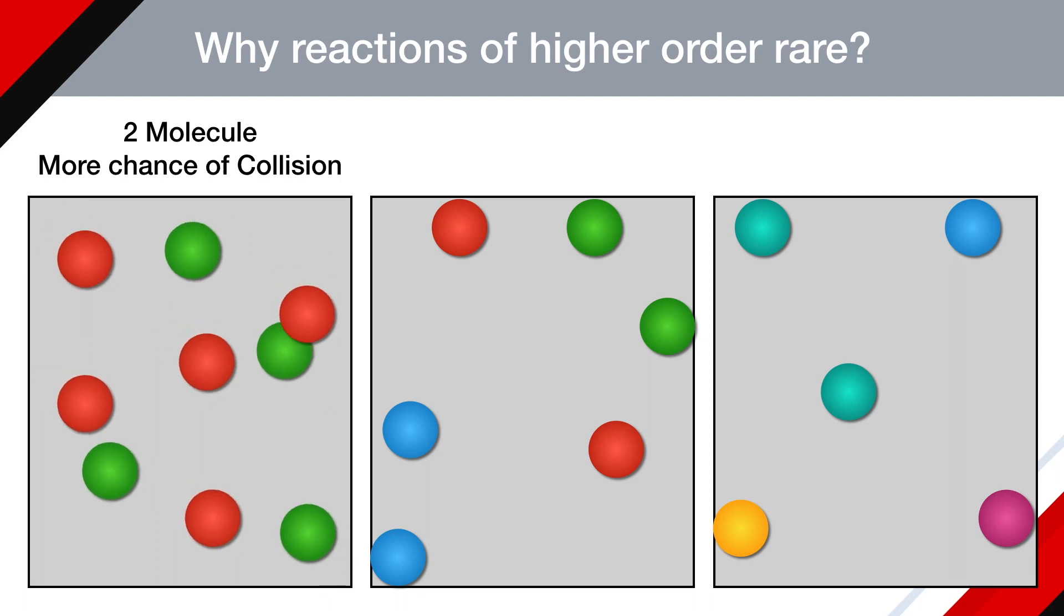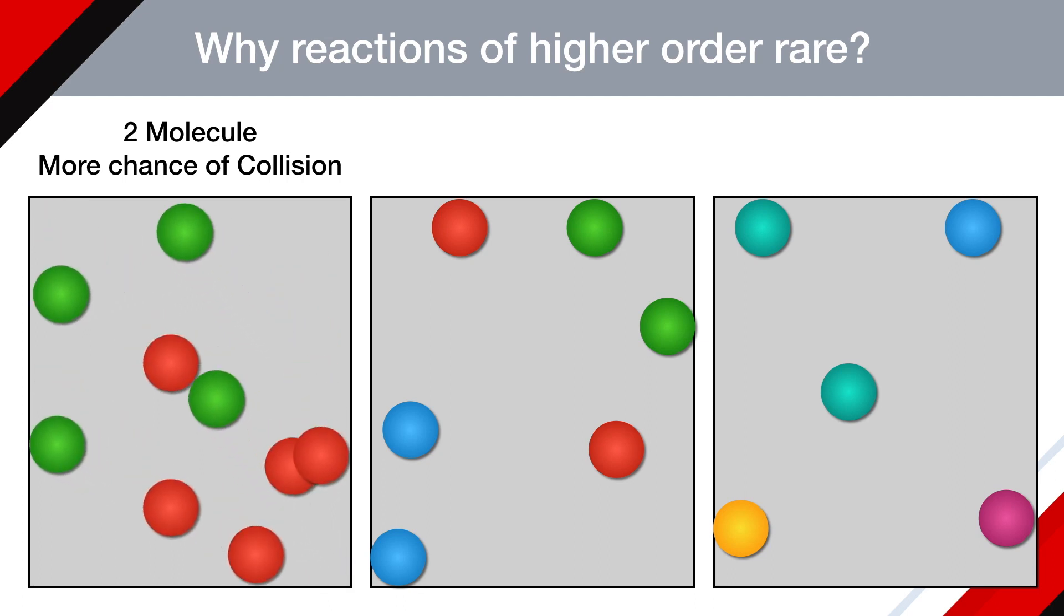In a matrix of molecules, collision of two suitable molecules is more likely to be possible than the three suitable molecules colliding at the same time.